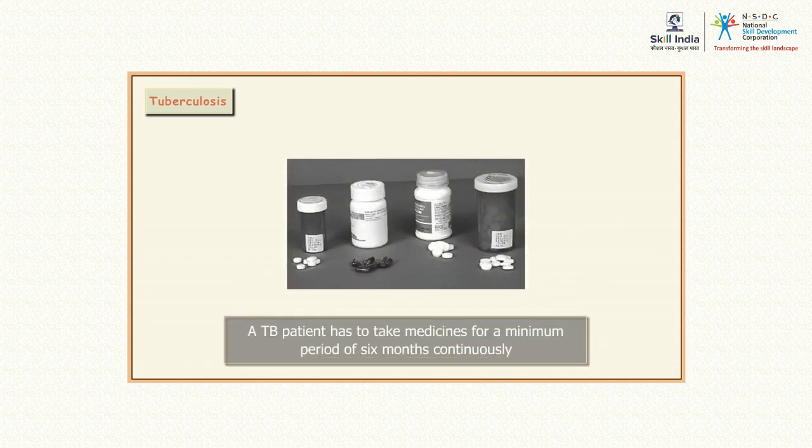A TB patient has to take medicines for a minimum period of 6 months continuously. The drugs may continue up to 1 year in some cases. These drugs must be monitored by the doctor.